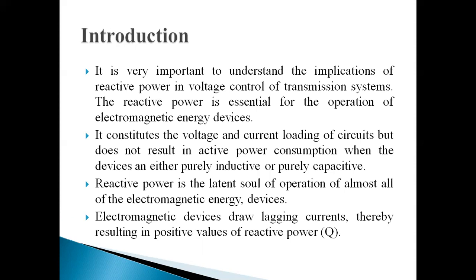A power system transmission line takes power for operation of electromagnetic energy devices. Electromagnetic energy devices — capacitive, inductive, resistive — consume active power. This constitutes the voltage and current loading of the circuit, but does not result in active power consumption when the device is either purely inductive or purely capacitive.